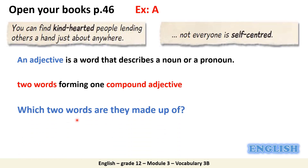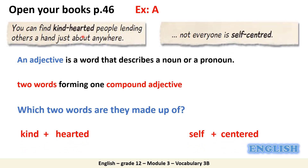So which two words are they made up of — the two adjectives that we have here? The first one is made up of kind and hearted, while the second one is made up of self and centered.